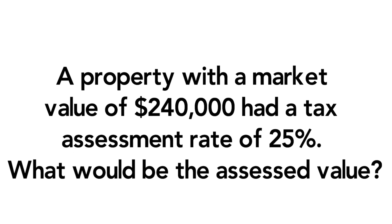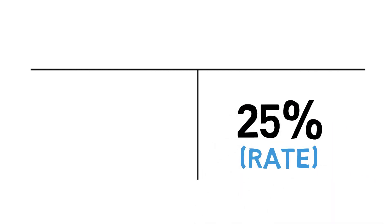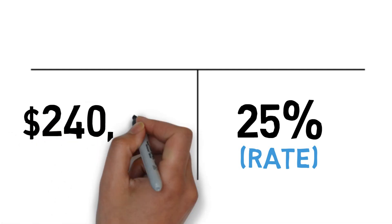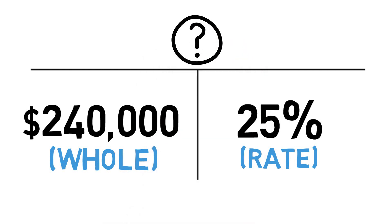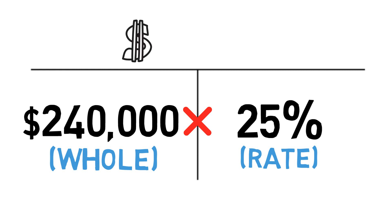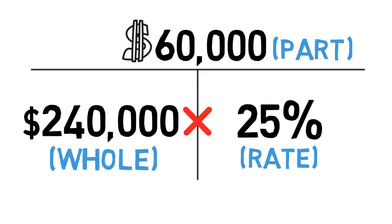This problem gives us one percentage, so I will need to draw one T. I always put the percentage in first — it goes in the bottom right — so I'll put twenty-five percent in the bottom right. The total market value of two hundred and forty thousand dollars is the whole amount and goes on the bottom left. Our formula says to multiply straight across: two hundred and forty thousand times twenty-five percent gives us an assessed value of sixty thousand dollars. That's our answer.